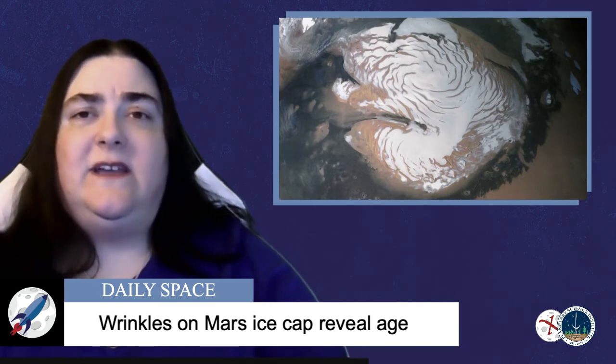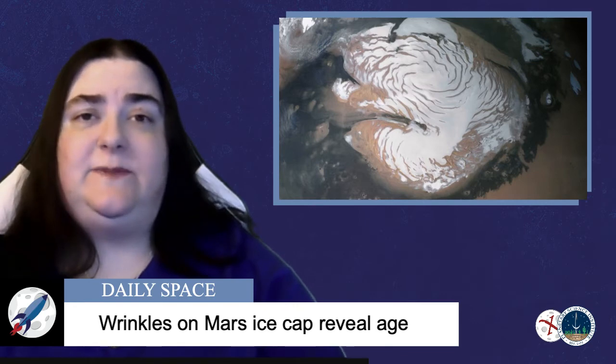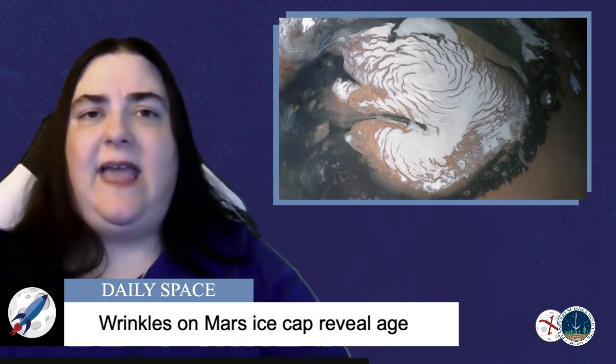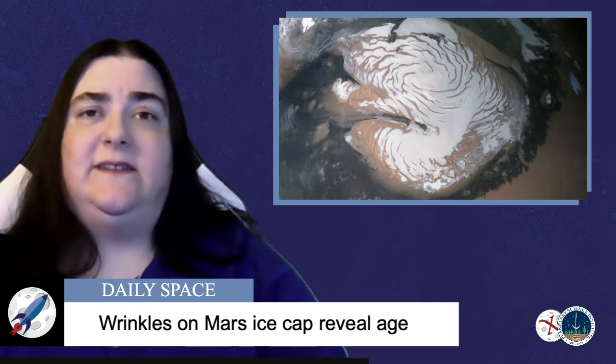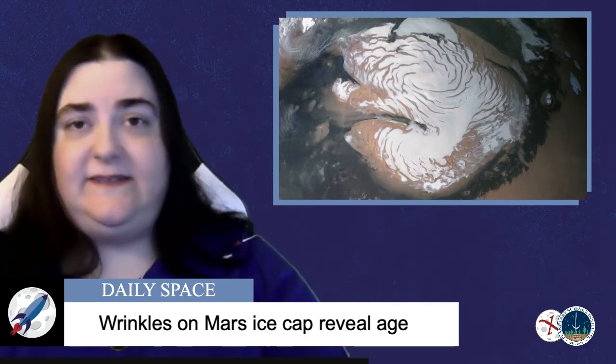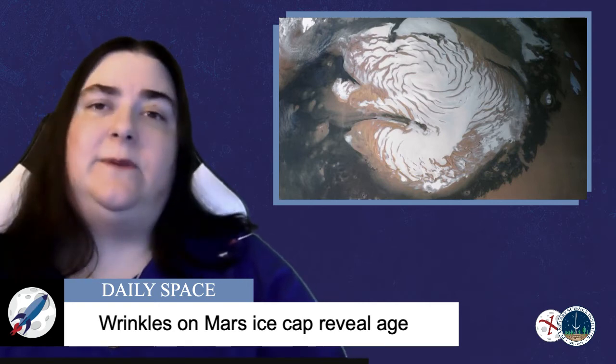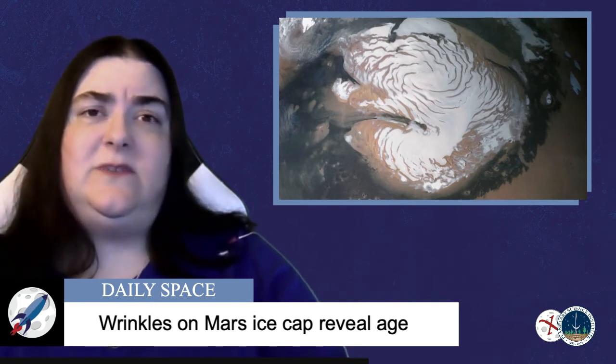Per the article in EOS, as the features age, the wavelength, the distance between each ripple, increases, and the ripples move toward the pole. This behavior held constant regardless of whether the researchers increased the atmospheric water vapor density or dialed it to zero, suggesting that the pattern forms regardless of whether the total amount of ice is increasing or decreasing.